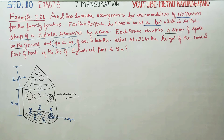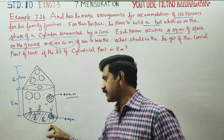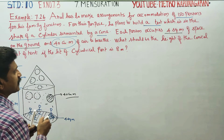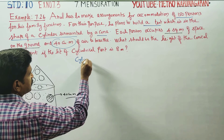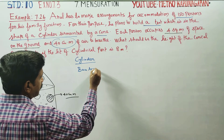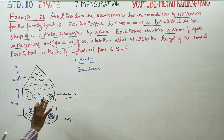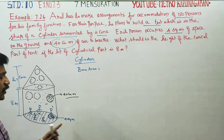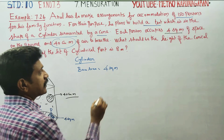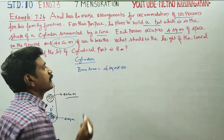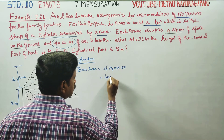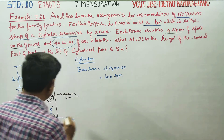First, we find the cylinder's base area. The base area of the cylinder equals 150 persons multiplied by 4 square meters each — that is 150 into 4.